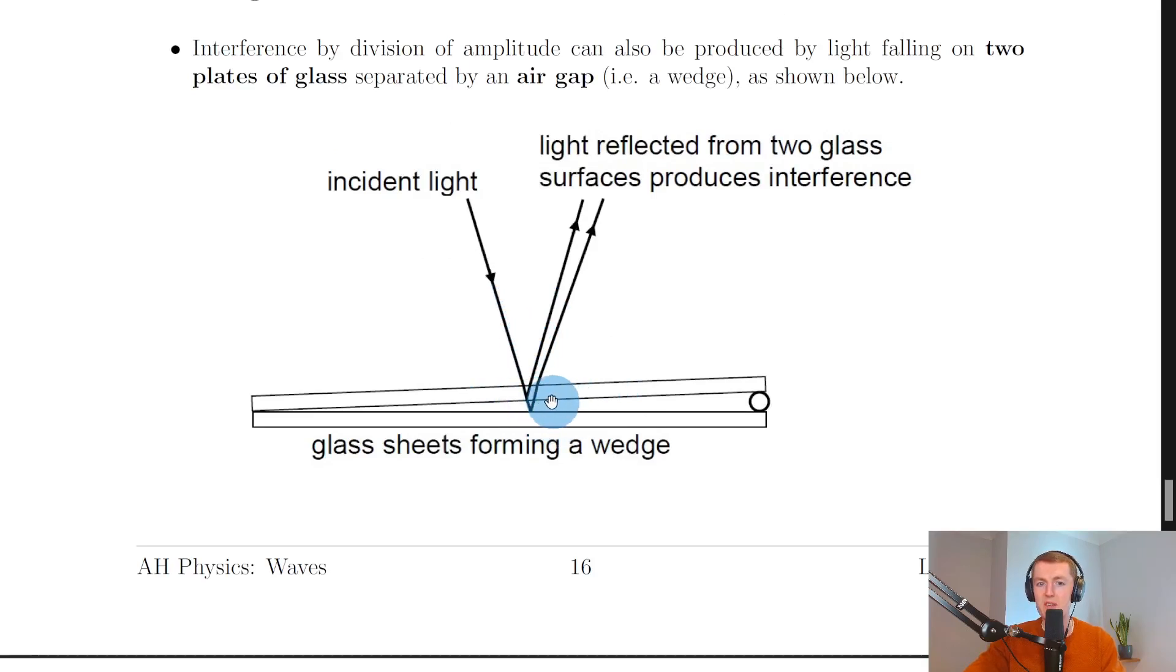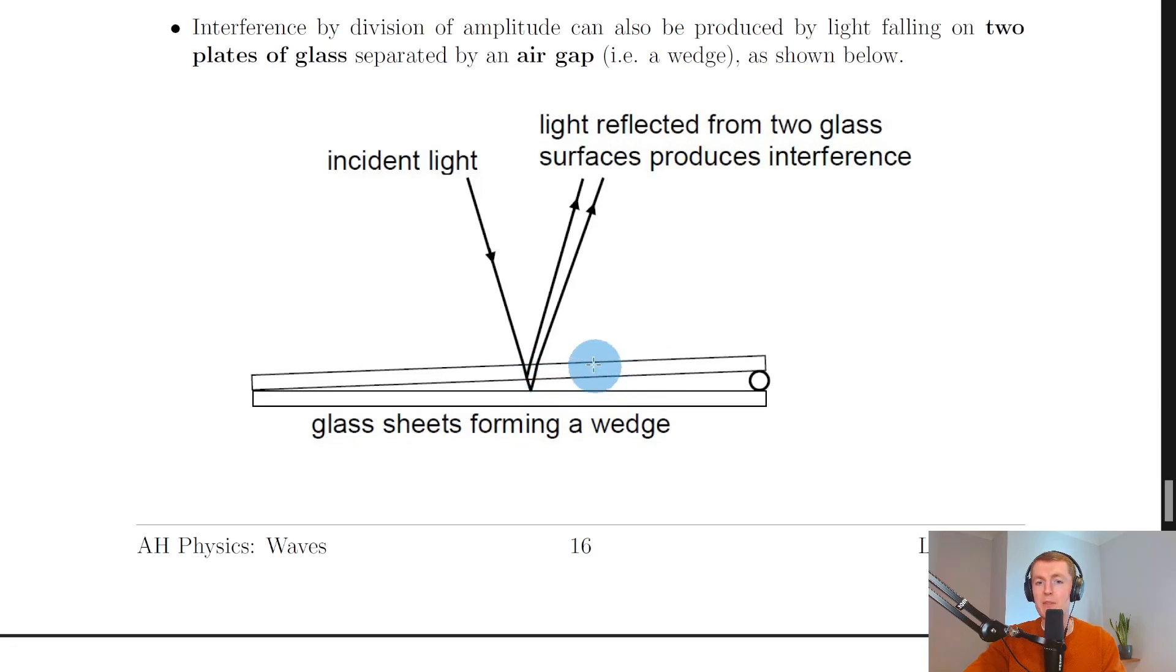That would be this inner surface where my cursor is and then this upper surface of the lower glass sheet. From the first reflection we're seeing there's no phase change because the light's reflecting at the surface between the glass and the air gap. Because we're going from a more dense material to a less dense material, there's no phase change.